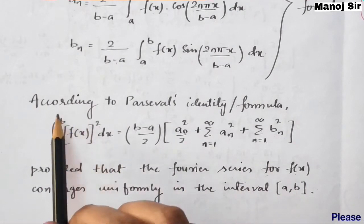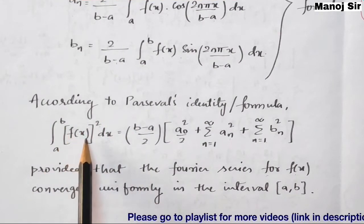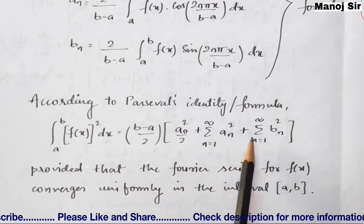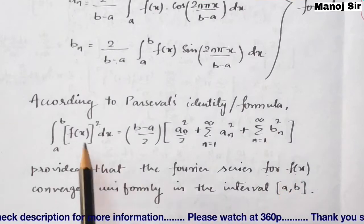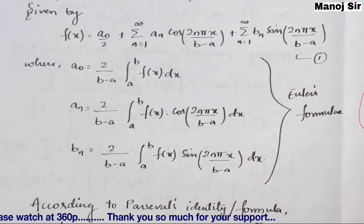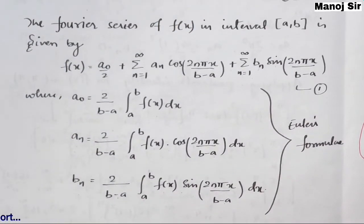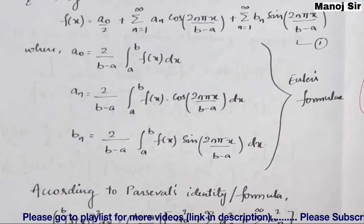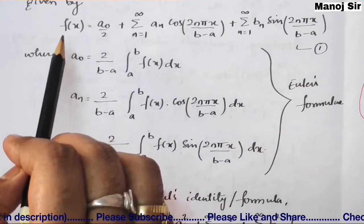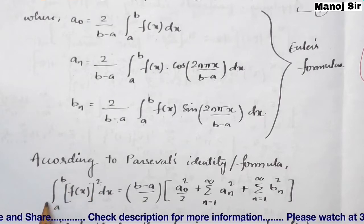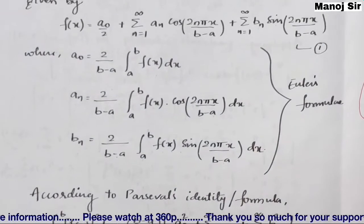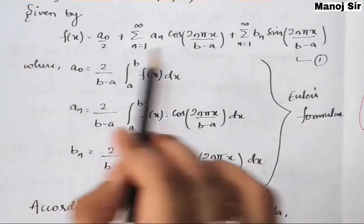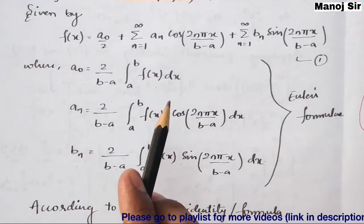To prove Parseval's identity, we observe that integral from a to b of [f(x)]² dx is what we need. Since we have the Fourier series for f(x), if we multiply both sides of equation one by f(x) and integrate from a to b, the left side becomes the integral of [f(x)]², which is exactly what we want.